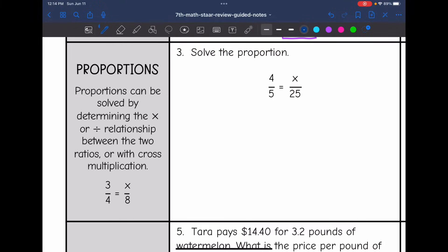Okay, now we're going to look at proportions. So proportions are two ratios set equal to each other like this. And usually a part of them is missing. A proportion can be solved by determining the multiplication or division relationship between the two ratios or with cross-multiplication. So for example, on this one right here, I can see that from four to eight, I would multiply by two. From three to two, I would do the same thing, multiply by two, and three times two is six. That means x equals six.